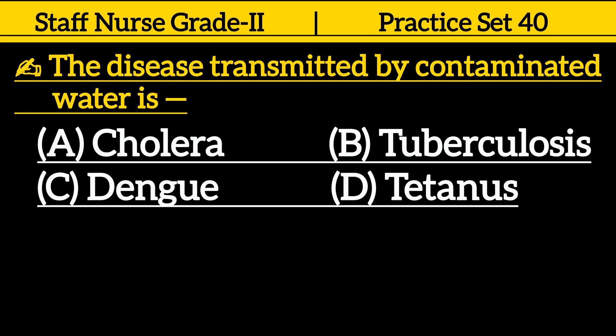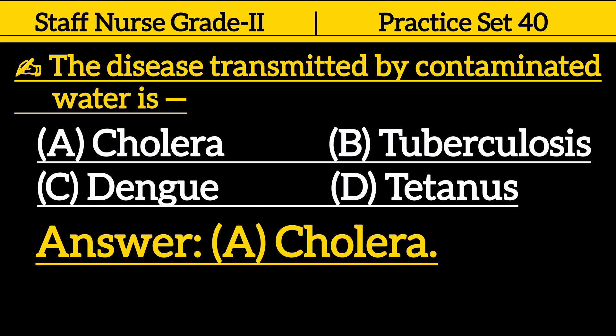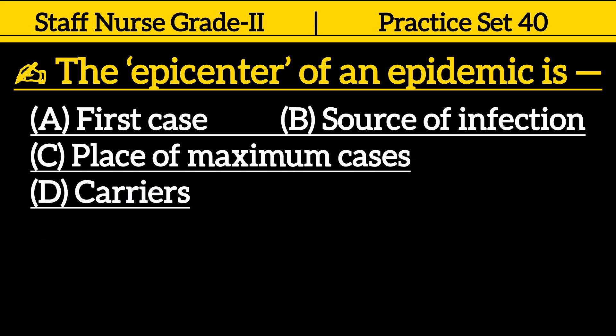The disease transmitted by contaminated water is: Option A. Cholera. Option B. Tuberculosis. Option C. Dengue. Option D. Tetanus. Correct answer is Option A. Cholera.